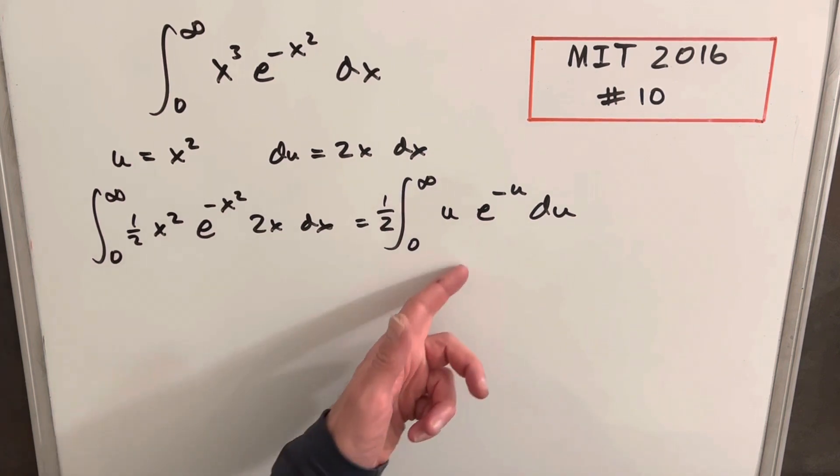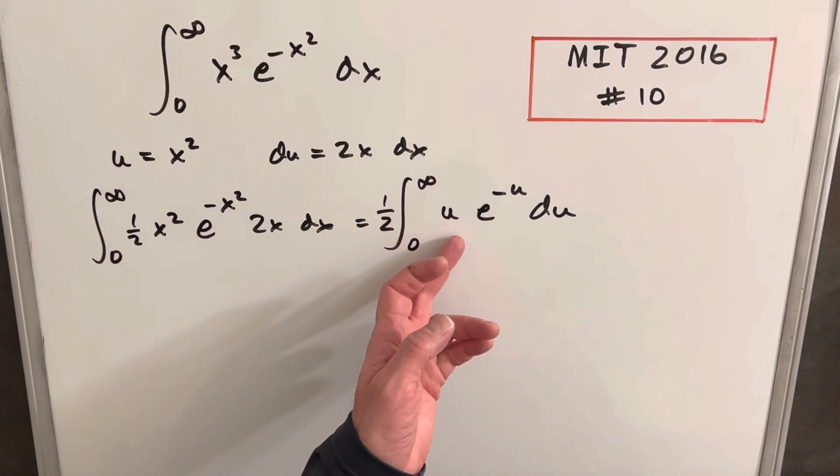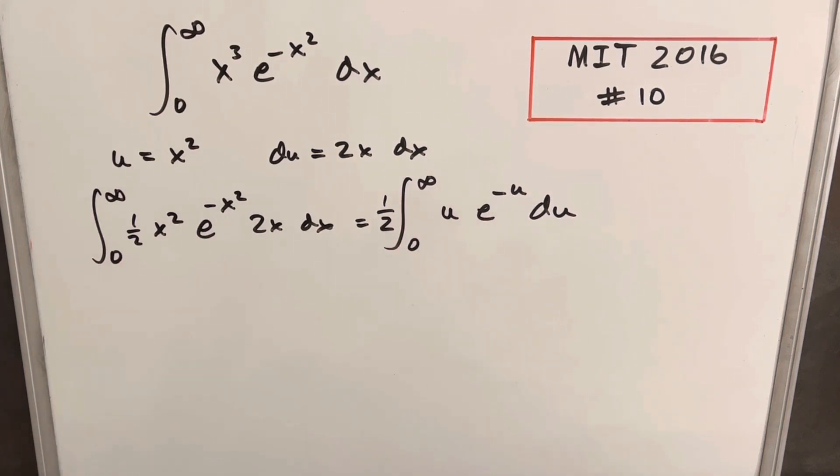And then from here, this is set up perfectly for integration by parts. We know if we use integration by parts, when we differentiate u, it'll be 1 and 0, and it's going to terminate pretty quick and be fairly easy. But what I want to do is, I've done that a bunch of times, so I'm going to try to do something a little different, and I think this is a little quicker too. What I want to point out is the similarity between this integral and the gamma function.